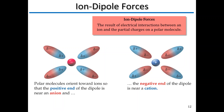The first type we'll go over is ion-dipole — exactly what it sounds like. If we have an ion in the presence of molecules that have a dipole, we end up with ion-dipole attractive forces. This is a result of electrical interactions between an ion and the partial charges on a polar molecule. Here we have two examples: a negative ion (anion) and a positive ion (cation). The polar molecules will orient so that their partial positive end points toward the anion, and their negative end points toward the cation.